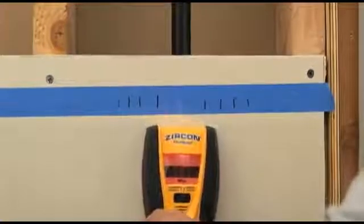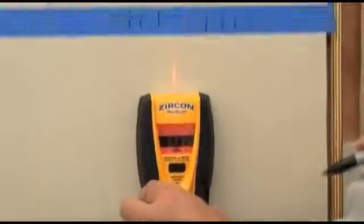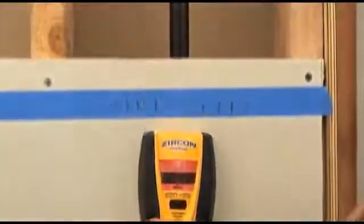To confirm the location of the metal target, such as a pipe, scan vertically. The tool should indicate a constant strong signal as you run along the pipe.